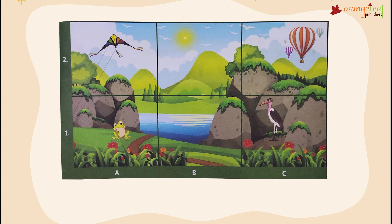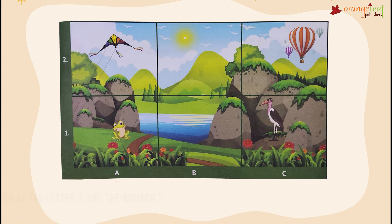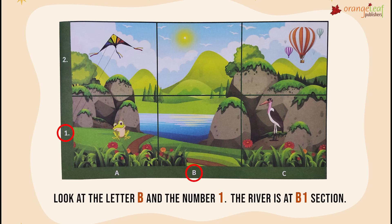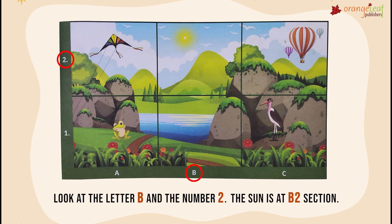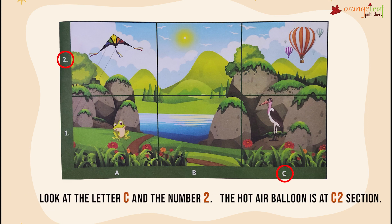Look at the following scenery. Let's find out the location of the objects using spots. You have 1 and 2 on the vertical axis, and A, B, and C on the horizontal axis. Look at letter A and number 1 — the frog is at A1. The kite is at A2. The river is at B1. The sun is at B2. The stalk is at C1. And the hot air balloon is at C2.